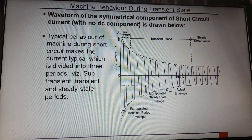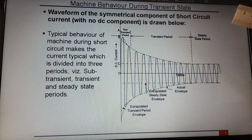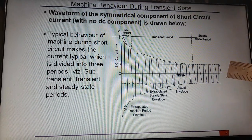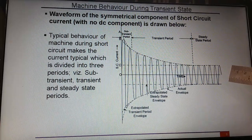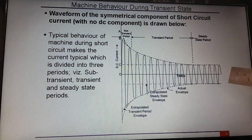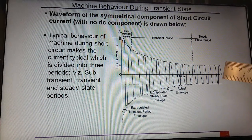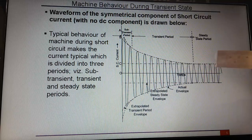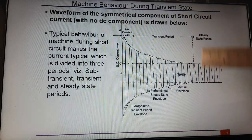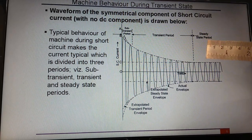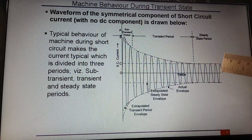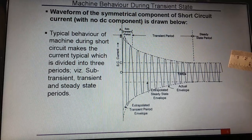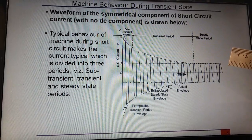This is the machine behavior during a transient state. Whenever any transient condition happens to the machine, this is the performance of the machine — which the machine itself provides without any external components.